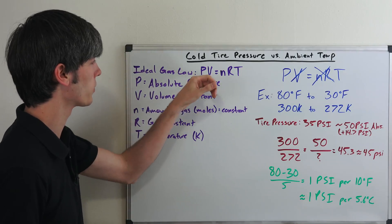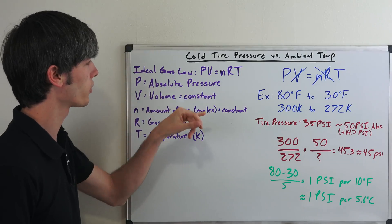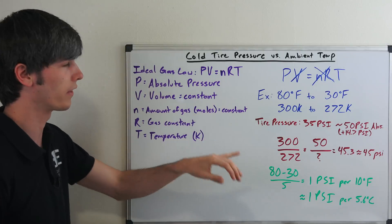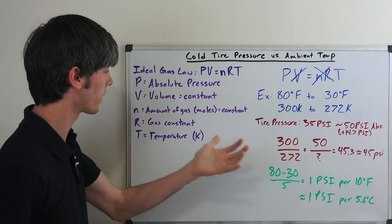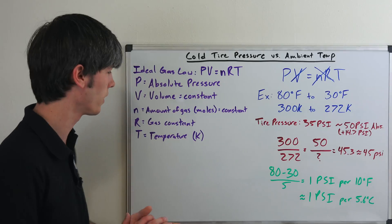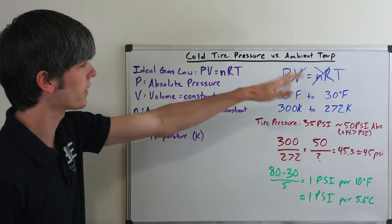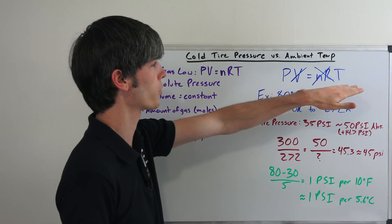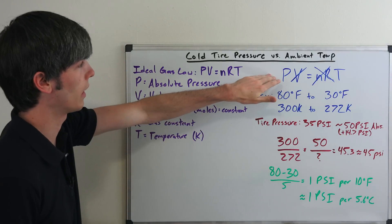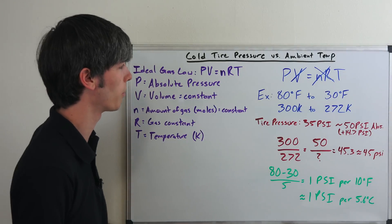P is the absolute pressure within the tire. V is the volume, so it's constant. N is the amount of gas within the tire. This is in moles, and this is also constant. R is a gas constant, which of course is constant. And T is temperature. So, if we eliminate the constants, we have P being proportional to T. So, pressure and temperature are directly proportional.